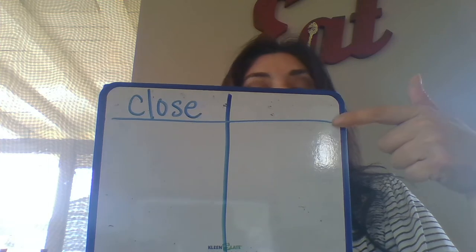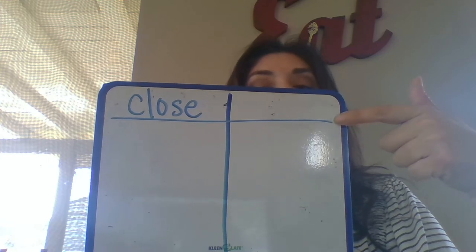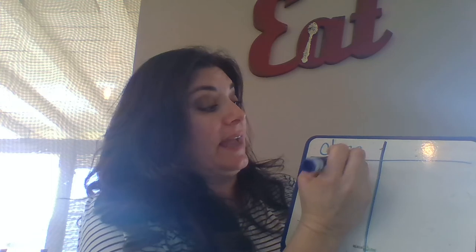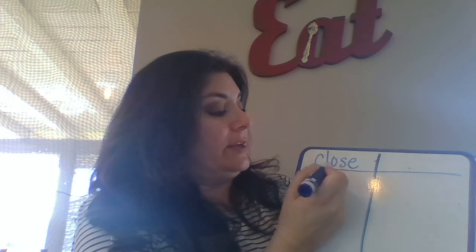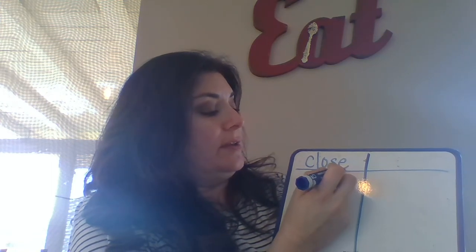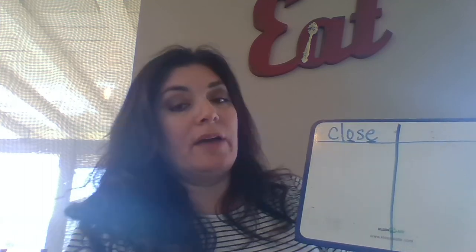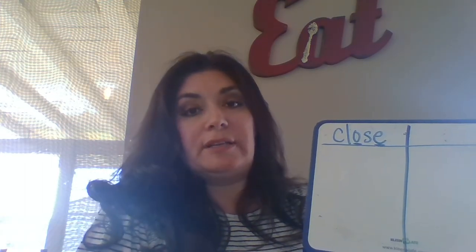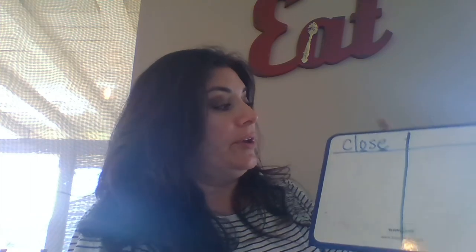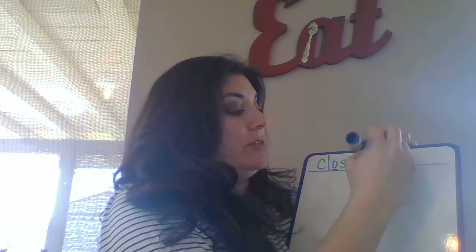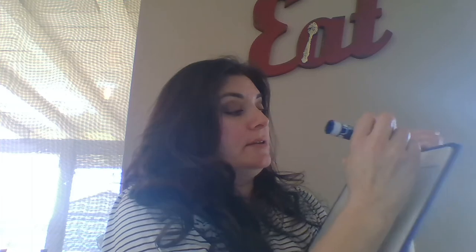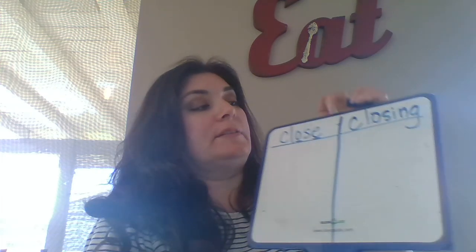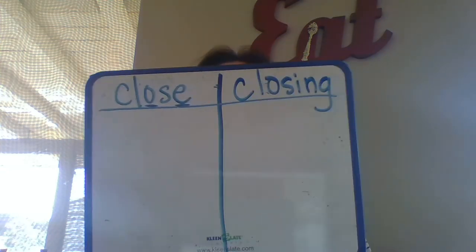On the other side we're going to talk about what happens when you add an ending to a word that ends with a silent E. For this word, I want you to underline the long O and the silent E on the end, because that's the vowel pattern we're going to be paying close attention to. On the right side, I want you to write the word 'closing.'